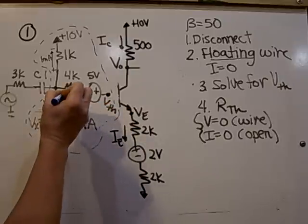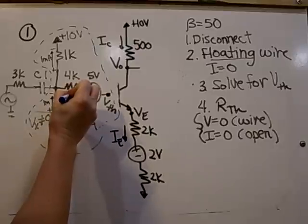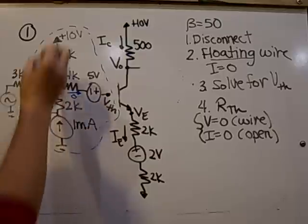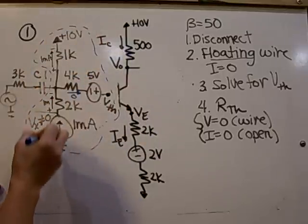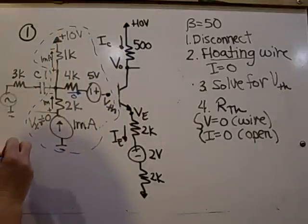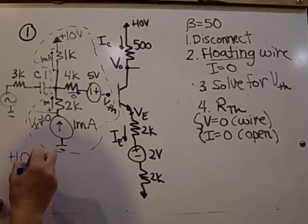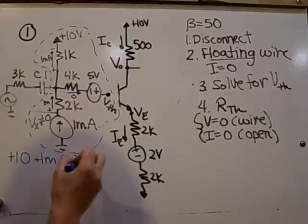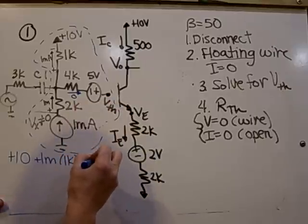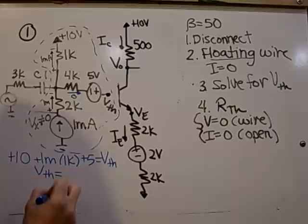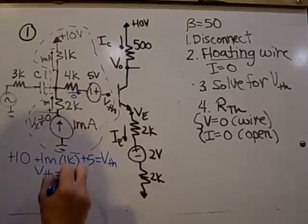So to find VTH, there's no current in this floating wire, so all the current goes through. Taking a loop from the top, because we don't know the drop on the bottom, is plus 10, plus 1 milli times 1k. Then there's no drop here, plus 5, and that's equal to VTH. So solving that gives us a VTH of plus 16 volts.